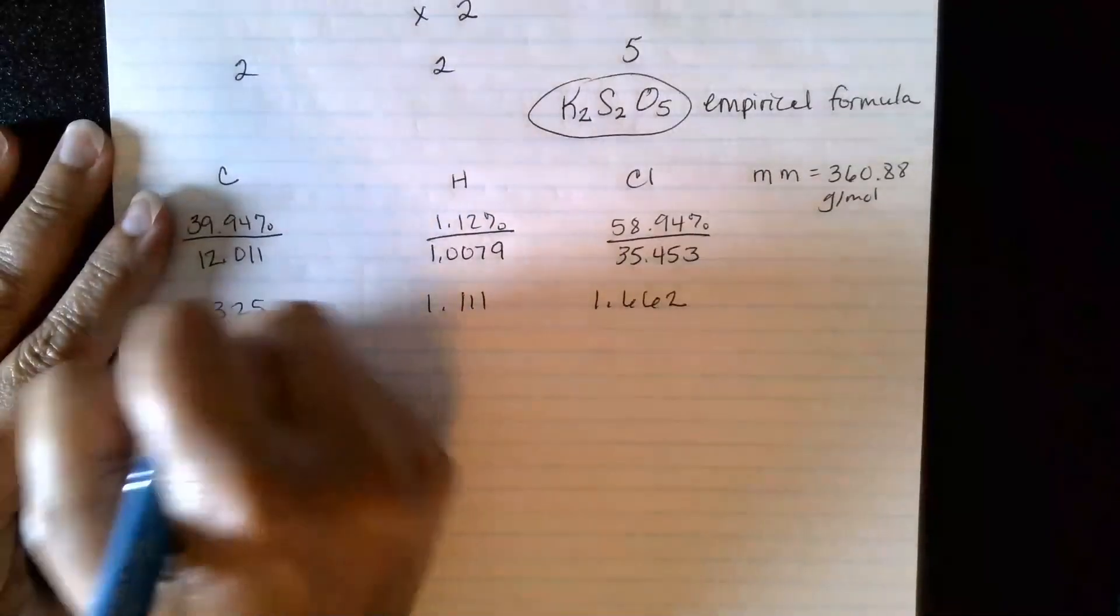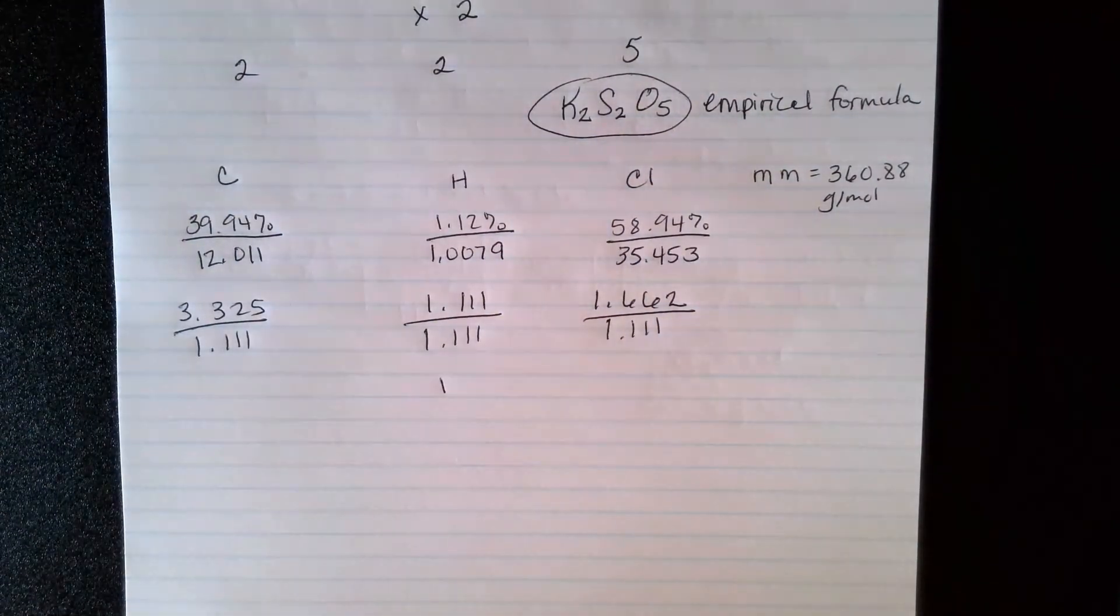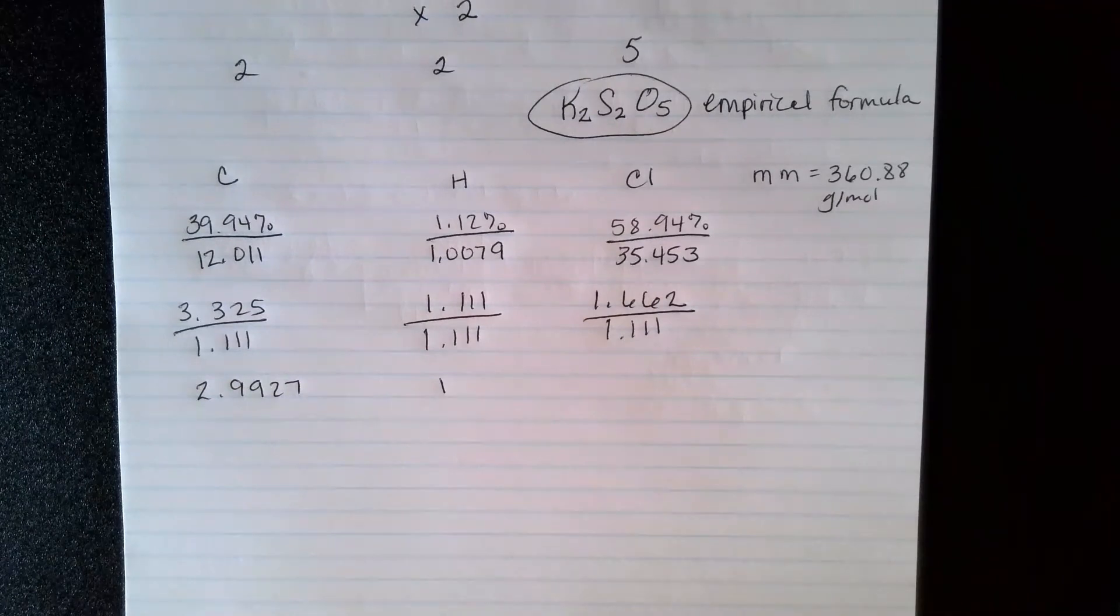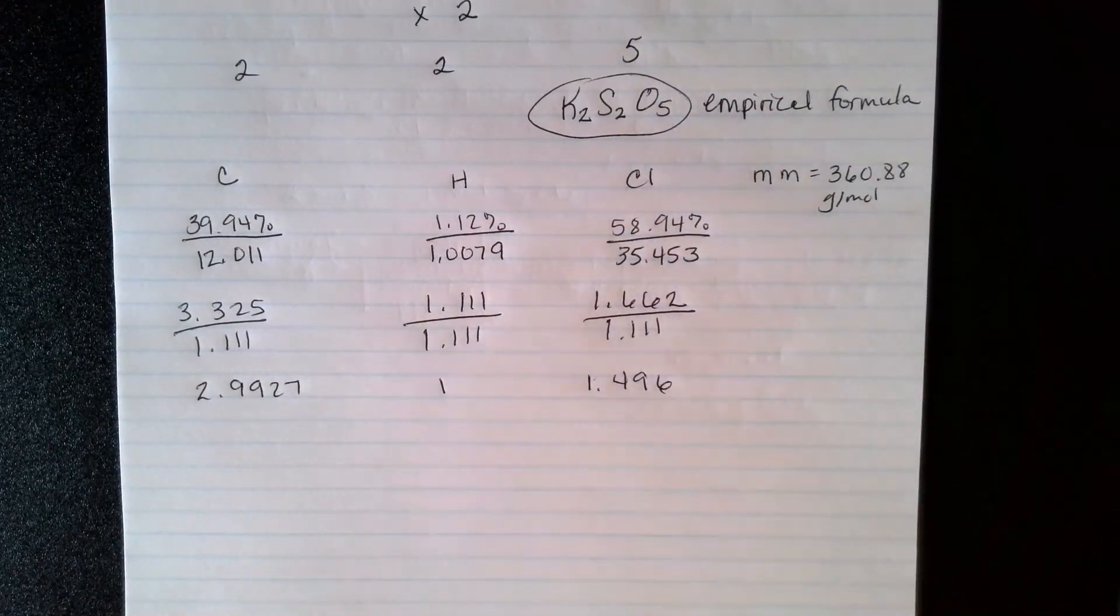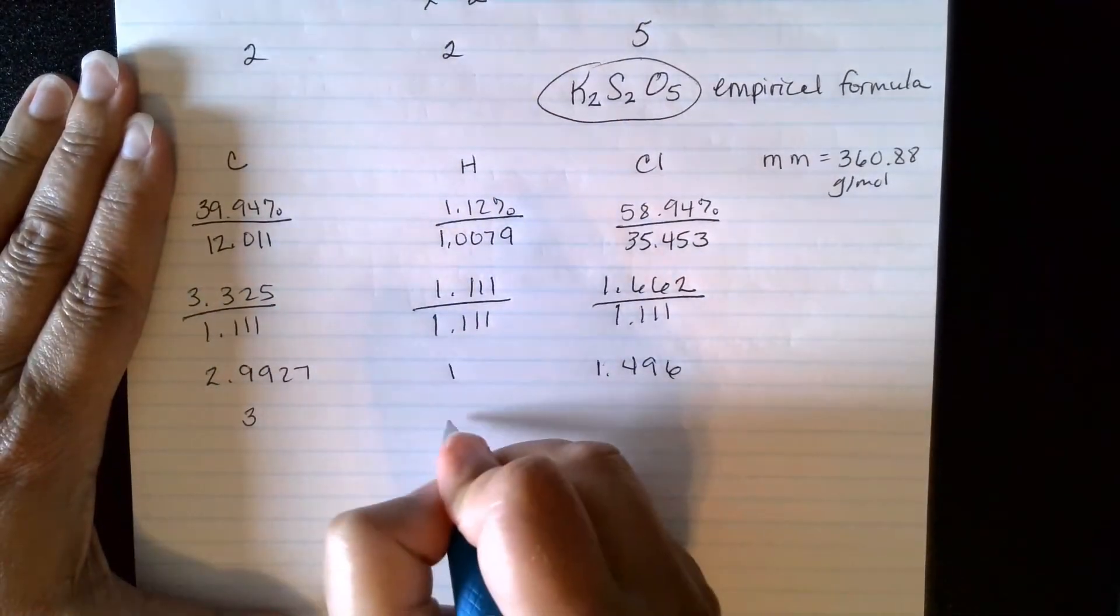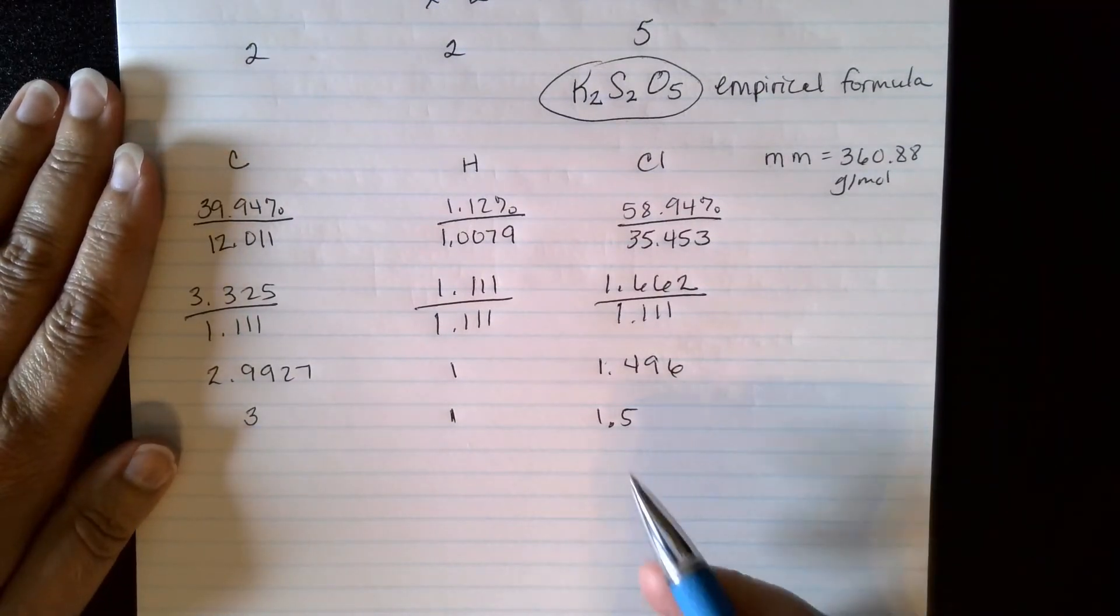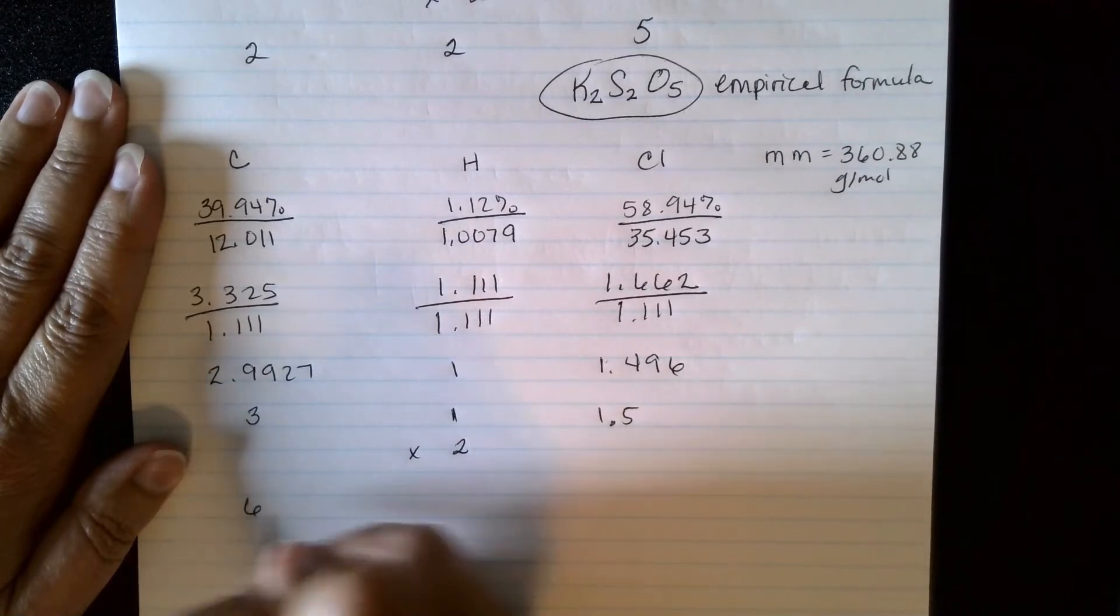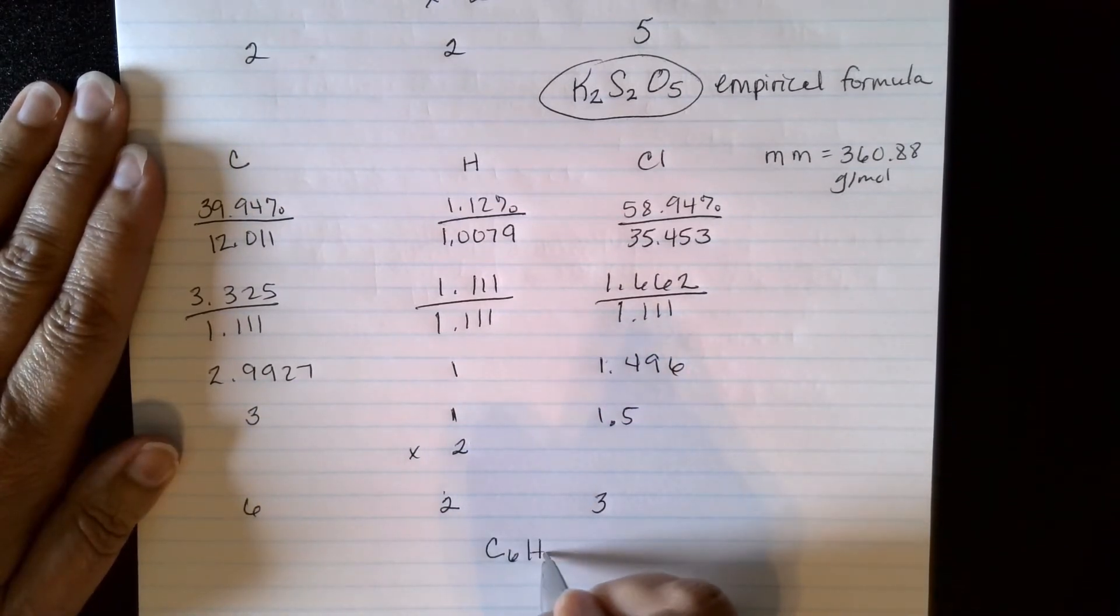Second step is divide by the smallest, that one's easy. Okay, so this one I can round at 3, this is 1, and this is 1.5. And once again, I'm left with something that's not a whole number. So in this case, I'm going to have to again multiply by 2, because 1.5 times 2 is a whole number. So I'm going to take all of these by 2, 6, 2, and 3. So that means my empirical is going to be C6H2Cl3.